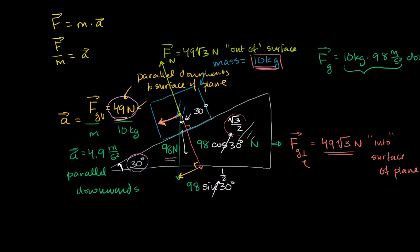We don't see this block of ice accelerating downwards into this wedge, because the wedge is supporting it. So there must be a counteracting force that the wedge is exerting on the block. That counteracting force is the normal force of the wedge on the block of ice, and that is exactly opposite to the force of gravity in this direction. These completely balance each other out in the perpendicular direction, which is why this block is not accelerating in that direction.